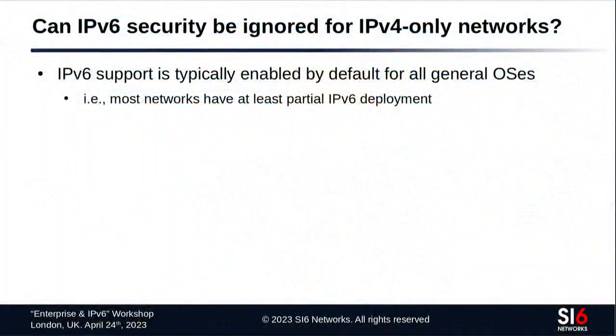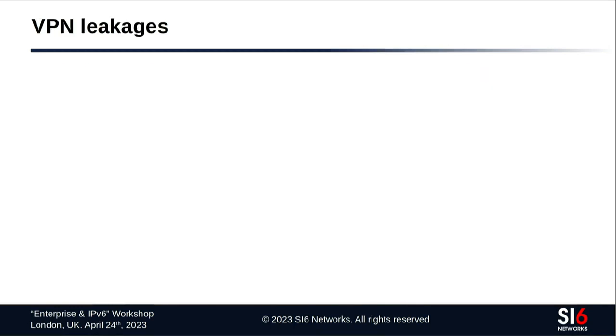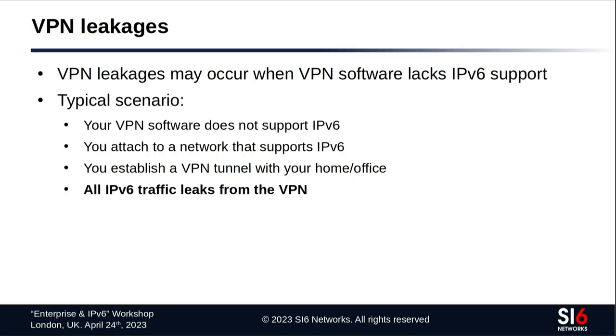Two quick final points: first, some say 'my network is IPv4 only so I don't need to care about IPv6.' You should care — most systems have IPv6 support enabled by default, so there's no truly IPv4-only deployment. Second, VPN leakage: a typical scenario is VPN software that only handles IPv4. When you connect to an IPv6 network and get IPv6 connectivity, but your VPN software doesn't support it, all IPv6 traffic leaks outside the VPN. Even in 2023 there are still vendors suffering this problem.